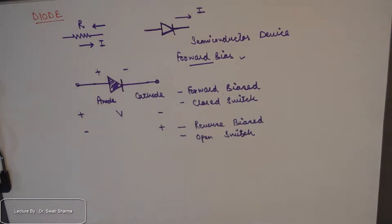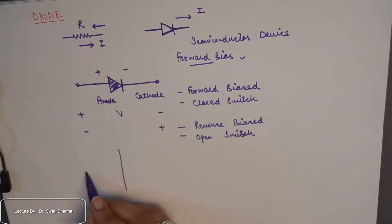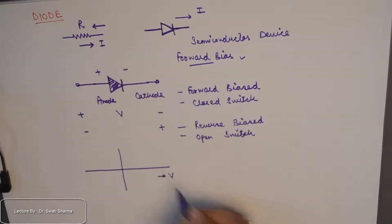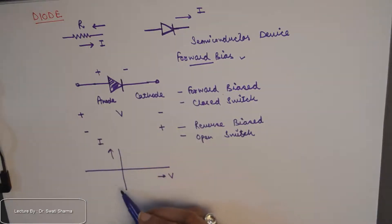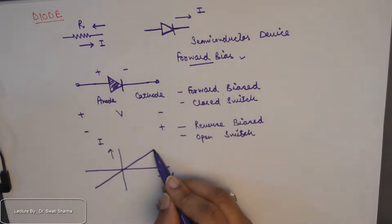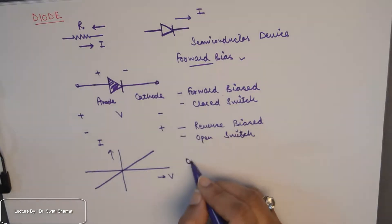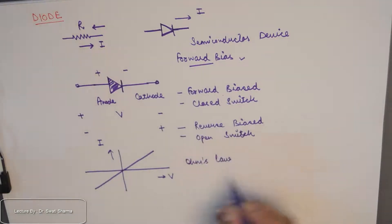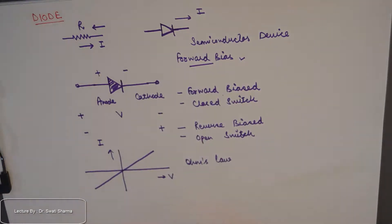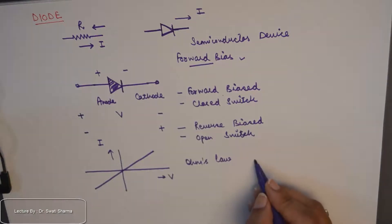Now talking about the VI characteristics of the diode: the VI characteristics of a resistor are linear in nature. If I have voltage on the x-axis and current on the y-axis and I go on increasing the voltage while plotting corresponding values of current, I get a linear graph. So the VI characteristics of a resistor are linear and by applying Ohm's law we can easily find voltage or current. The VI characteristics of a diode, on the contrary, are not linear in nature.